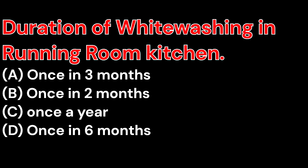Duration of whitewashing in a running room kitchen: A. Once in 3 months. B. Once in 2 months. C. Once a year. D. Once in 6 months. And the right answer is once in 6 months.